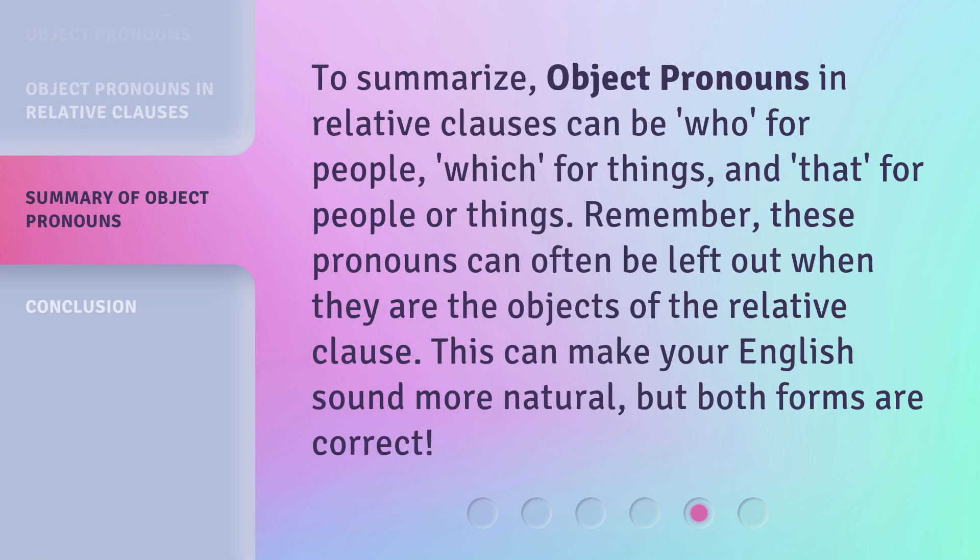To summarize, object pronouns in relative clauses can be: who (for people), which (for things), and that (for people or things). Remember, these pronouns can often be left out when they are the objects of the relative clause. This can make your English sound more natural, but both forms are correct.